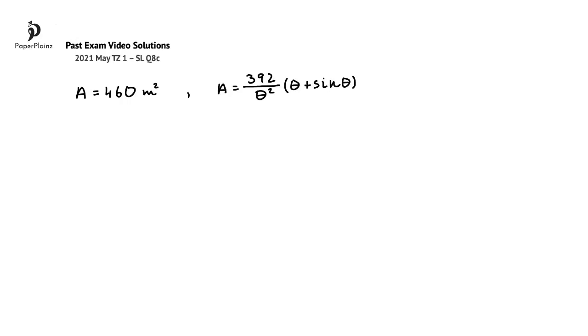Since in the previous question part we found an expression for this area, we can now write that 460 is equal to 392 over theta squared multiplied by theta plus sine theta.